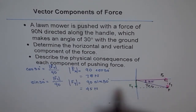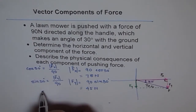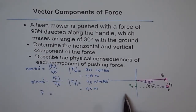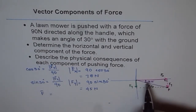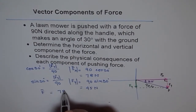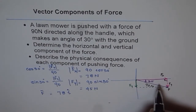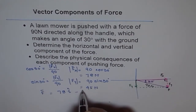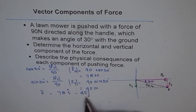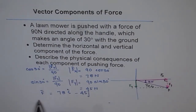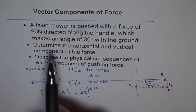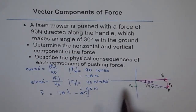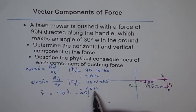We can now write the force of 90 Newtons, represented by F, as the sum of its components. The X component is along the positive direction, so it is written as 78i. The Y component is in the negative direction, so it is written as −45j. That is the rectangular component form. The horizontal component is 78 Newtons along the X axis, and the vertical component is 45 Newtons acting downwards.